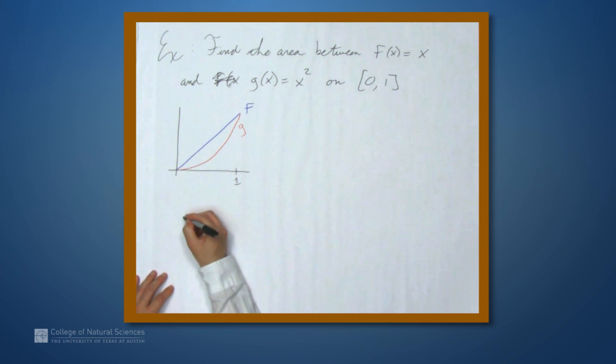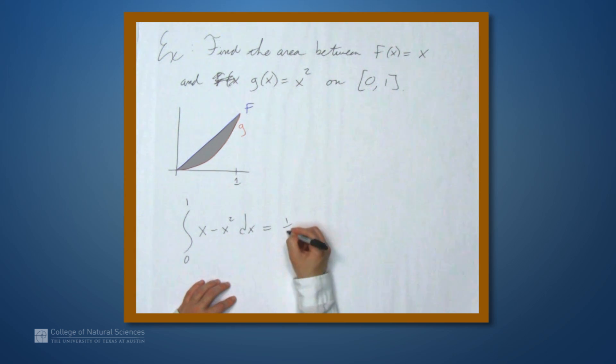So we're going to set up our integral as the integral from 0 to 1 of f of x minus g of x. So x minus x squared dx. And when we evaluate this, we get 1 half x squared minus 1 third x cubed, evaluated between 0 and 1.